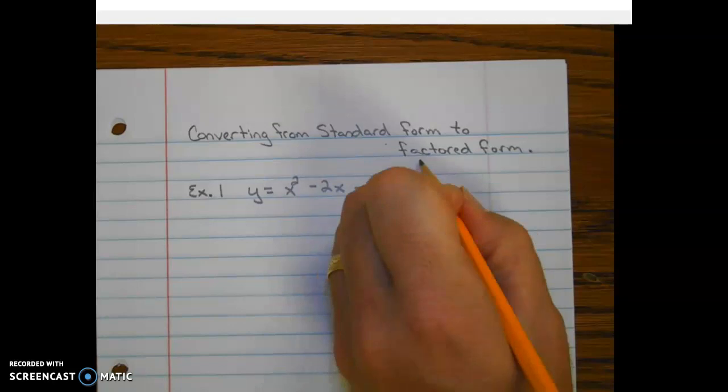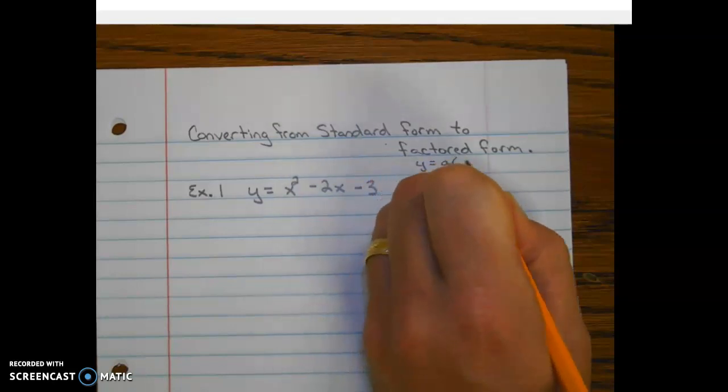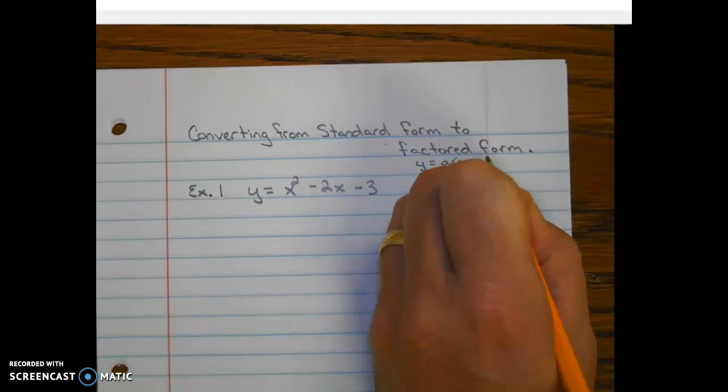So remember, factored form looks a little something like this: A times x minus root 1 times x minus root 2.